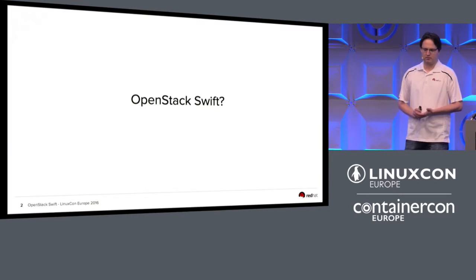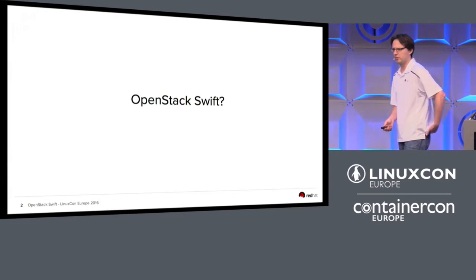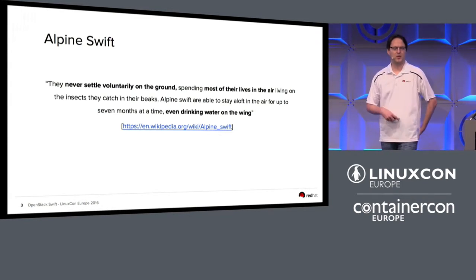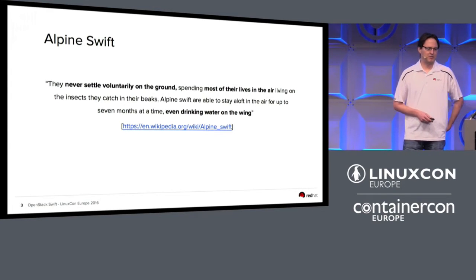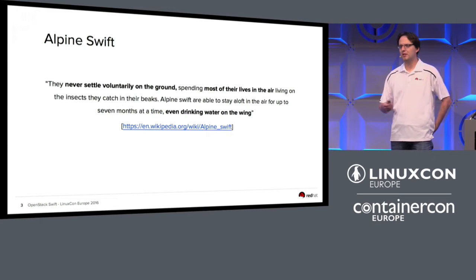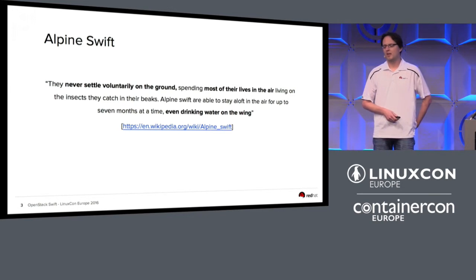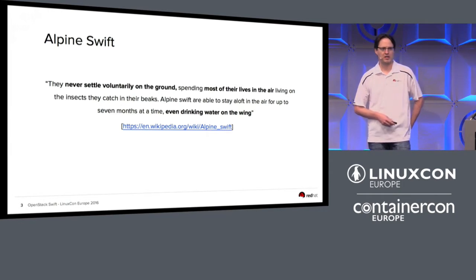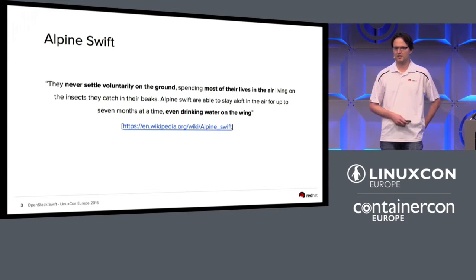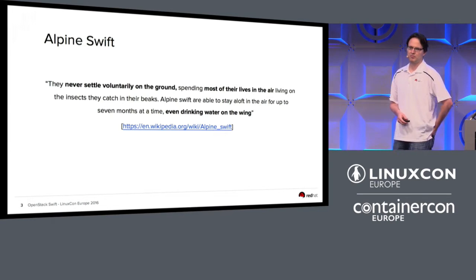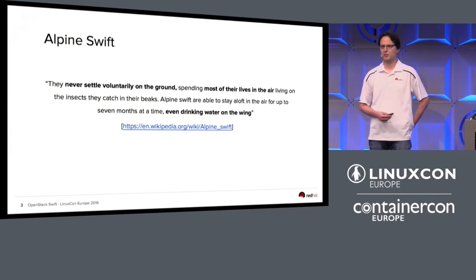I'd like to start with a small introduction to Swift today — what Swift is about, where it comes from, and how to use it. The name comes from a bird — the Alpine Swift. Many open source projects have an animal as their logo. The Alpine Swift is a bird that stays up in the air for months, up to seven months, eating in the air, drinking in the air, and normally doesn't come down to the ground. The same mechanism basically applies to OpenStack Swift — that's what we're trying to aim for. Even if parts of your cluster are down, you're still able to serve data to your users, store new data, and even upgrade your cluster while being in production, group by group of nodes.